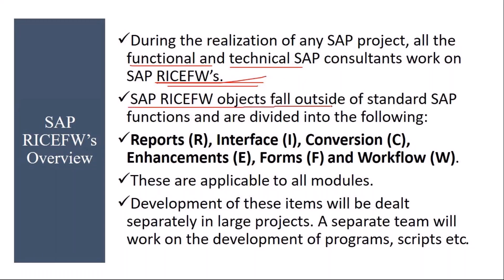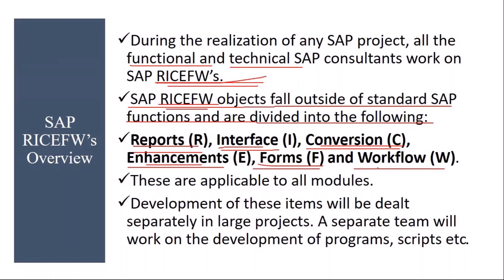SAP RICE FW objects fall outside of standard SAP functions. These RICE FW objects are required when you need any function outside of standard SAP. If you are not able to achieve any activity in standard SAP, then you go for RICE FW's. R means Reports, I means Interfaces, C means Conversion, E means Enhancements, F means Forms, and W means Workflow. We will discuss each one by one.